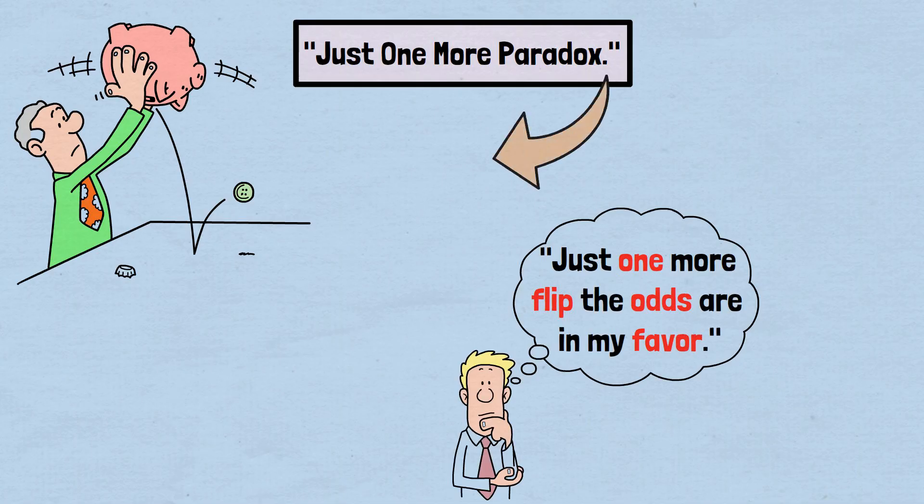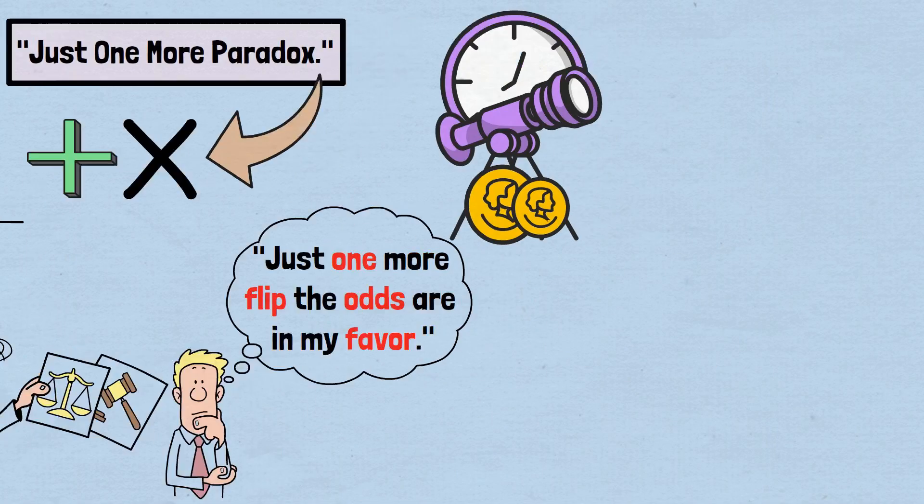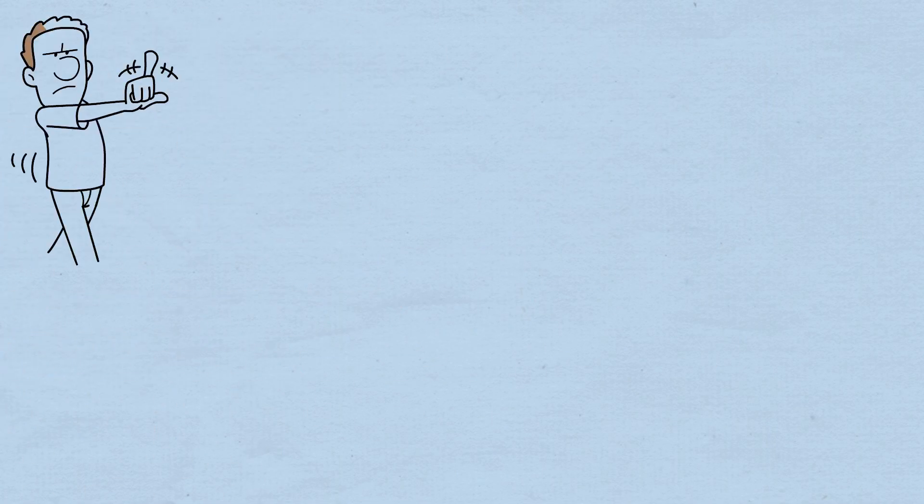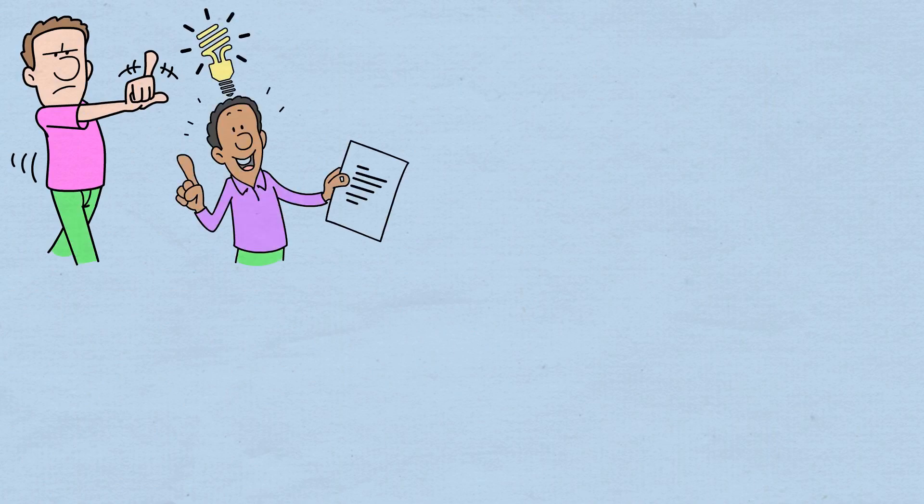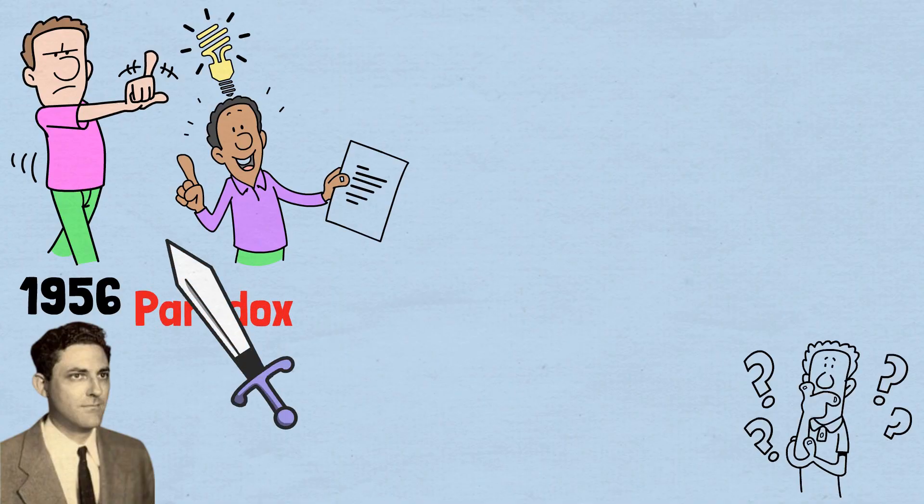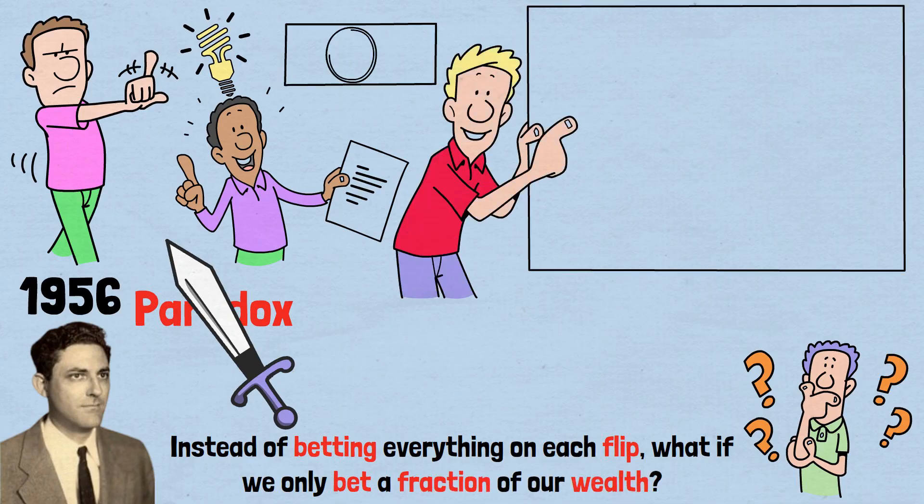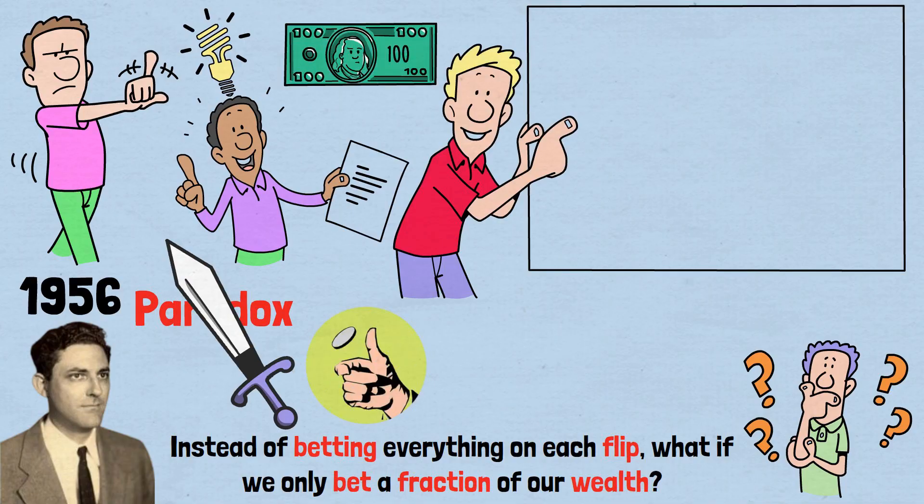The paradox reveals itself anywhere that outcomes multiply rather than add, and where we focus on individual decisions rather than long-term compound effects. But mathematics doesn't just reveal problems. It also provides solutions. In 1956, John Larry Kelly Jr. discovered a principle that cuts through this paradox like a sword through darkness. Kelly asked a different question. Instead of betting everything on each flip, what if we only bet a fraction of our wealth? Let's explore this step-by-step with a concrete example. Instead of betting our entire $100 on each flip, what if we bet only one-tenth? Just $10 each time.